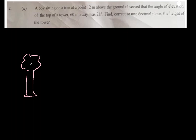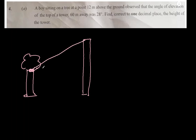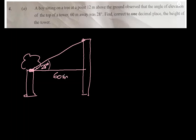So suppose this is the tree and the boy is sitting here. This is the tower and the angle of elevation from the boy to the top of the tower is 28 degrees. The line joining the two points — the angle they make with the horizontal — is called the angle of elevation at the lower point. The distance between the tree and the tower is 60 meters.